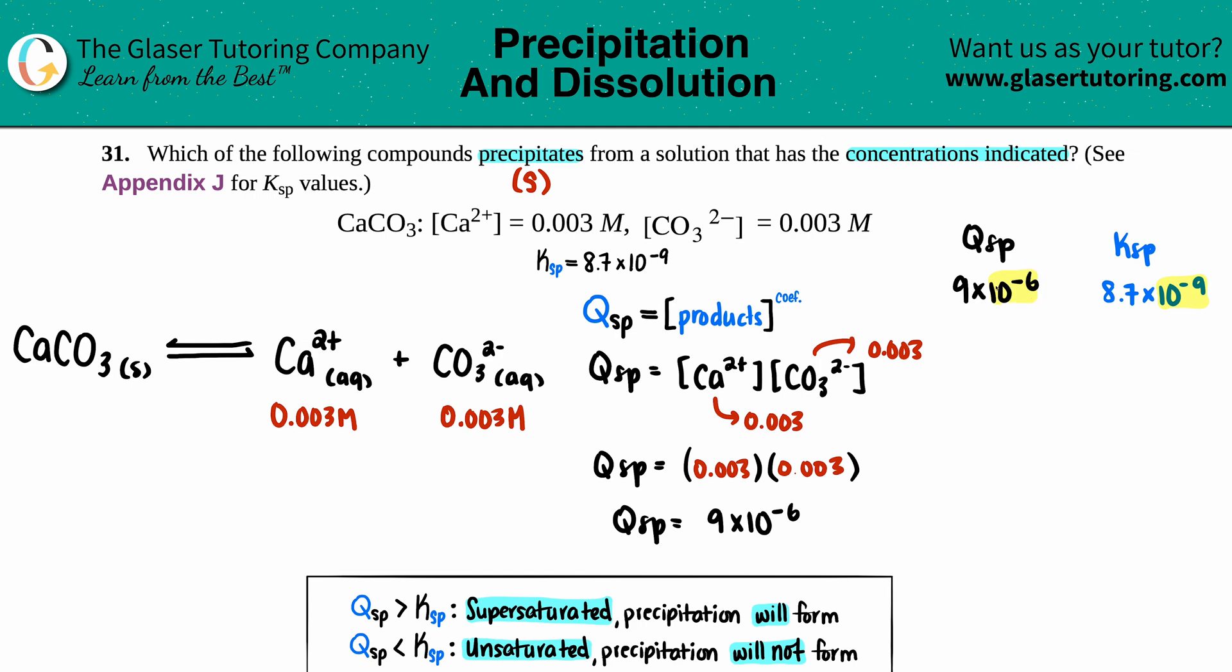So I know that the Qsp has to be greater than the Ksp. If you went over your limit, this is where we're at. The Qsp - we went over what's at equilibrium. If your Qsp is greater than the Ksp, you have a supersaturated solution, and that's when you will form a precipitate. Precipitate will form.